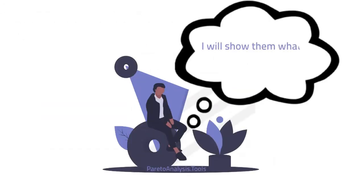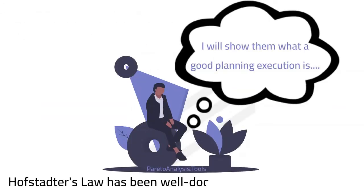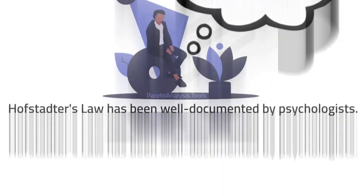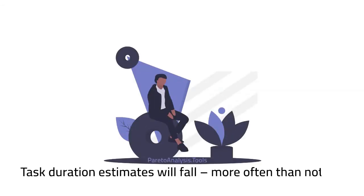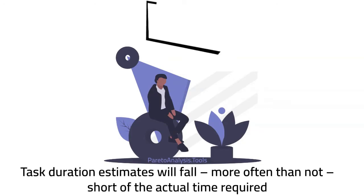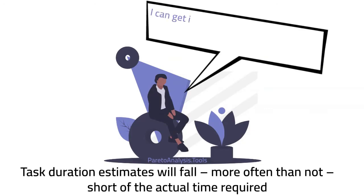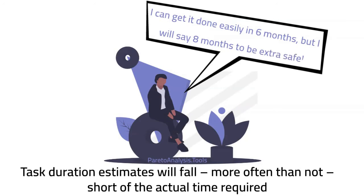Hofstadter's law and the planning fallacy phenomenon have been well documented by psychologists. Task duration estimates will fall, more often than not, short of the actual time required, even when the time allotment is increased to compensate for the human tendency to underestimate it.